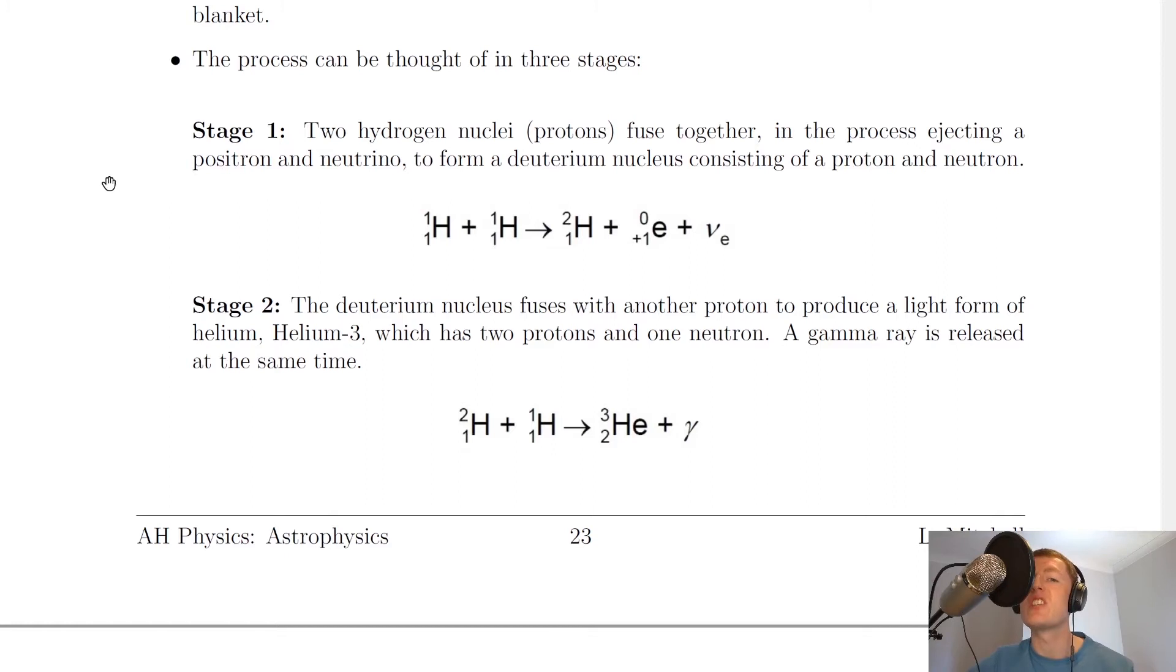Stage one involves two hydrogen nuclei, protons, which fuse together in the process ejecting a positron and neutrino to form a deuterium nucleus, which is hydrogen-2, consisting of a proton and neutron.